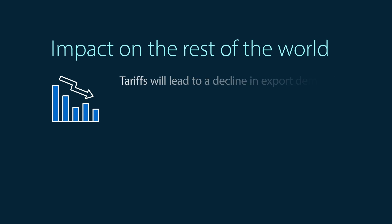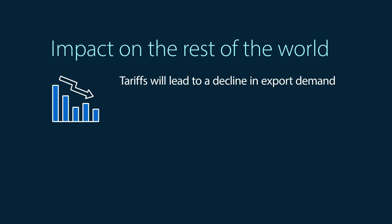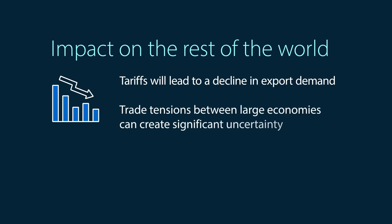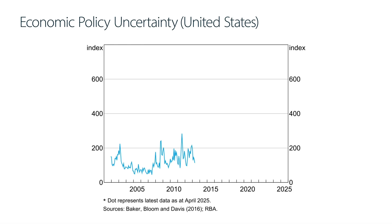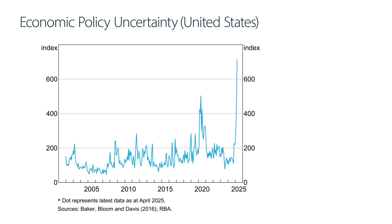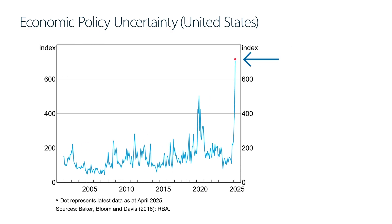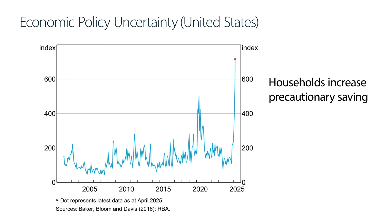For the rest of the world, tariffs will lead to a decline in export demand, because US consumers and businesses will buy fewer imported goods. On top of this, trade tensions between large economies can create significant uncertainty. This graph shows how uncertainty has changed over time. In an environment of high uncertainty, households will increase precautionary saving and businesses will delay investment, which will further decrease aggregate demand in the global economy.